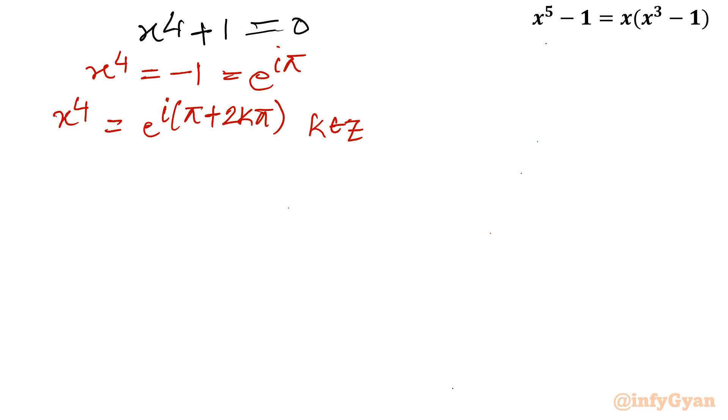Now I will raise both sides to the 1/4 power. So x will become e^(iπ/4). Let us take π common: e^(iπ/4(1 + 2k)). Where k will be integer 0, 1, 2, 3.